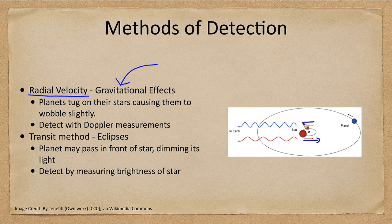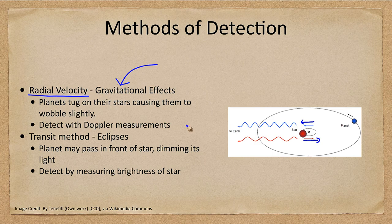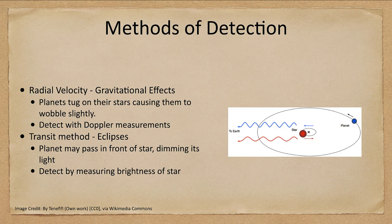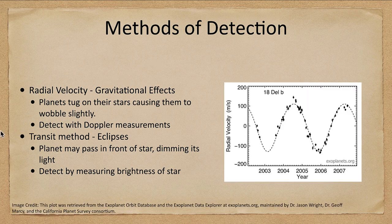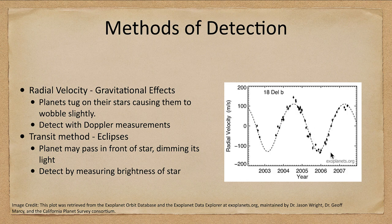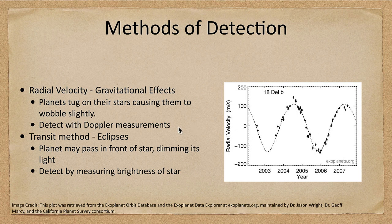That means we can detect it with Doppler measurements. When the star is coming toward us we will see a blue shift, and when the star is moving away from us we will see a red shift. That leads us to a radial velocity curve such as the one shown here where we can see the velocity changing, going up and down. We can use that to infer the existence of a planet.